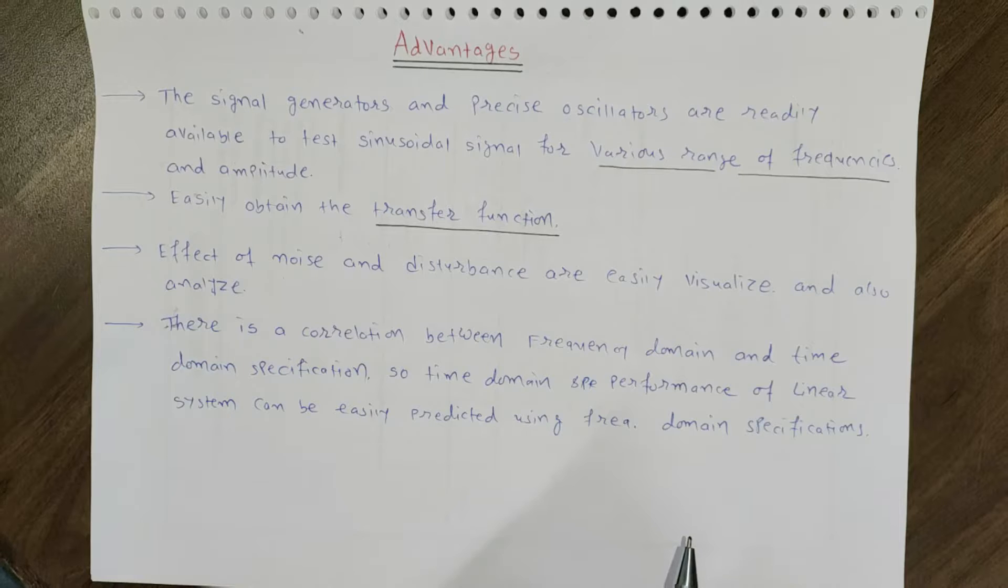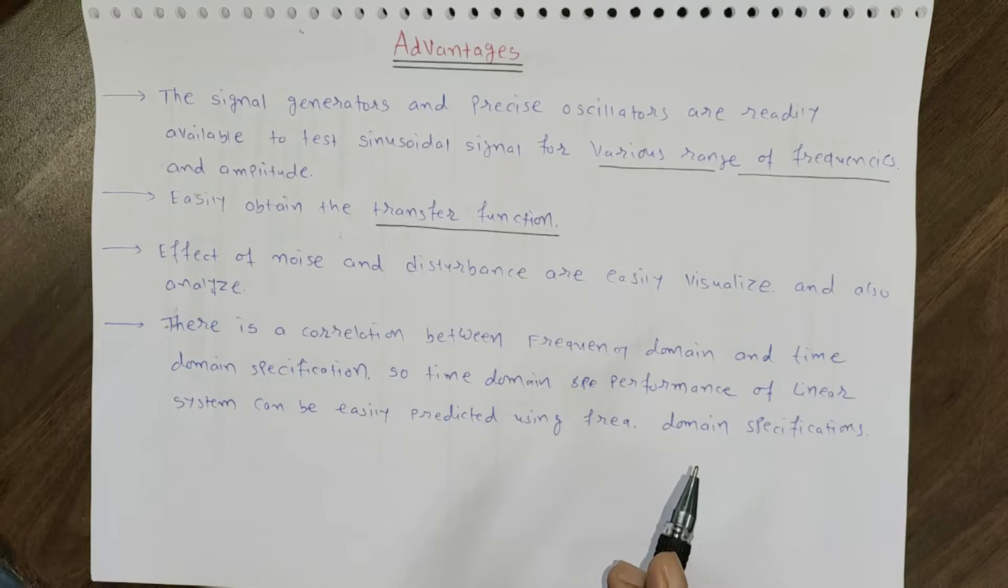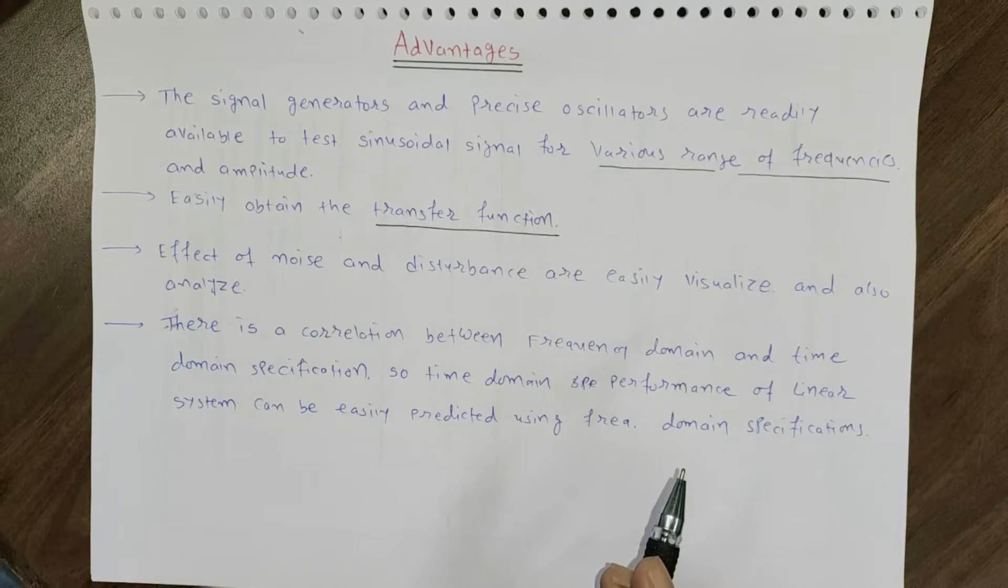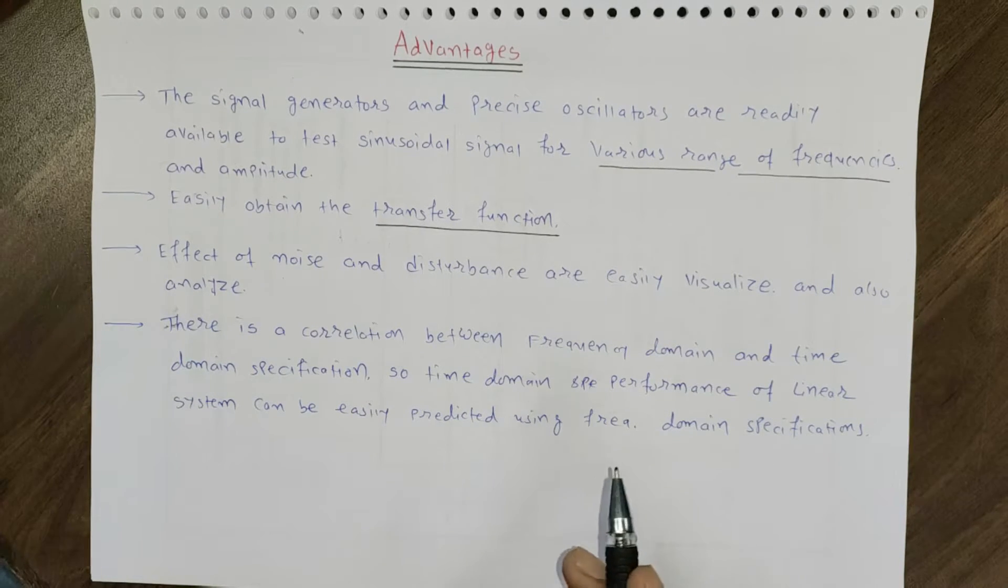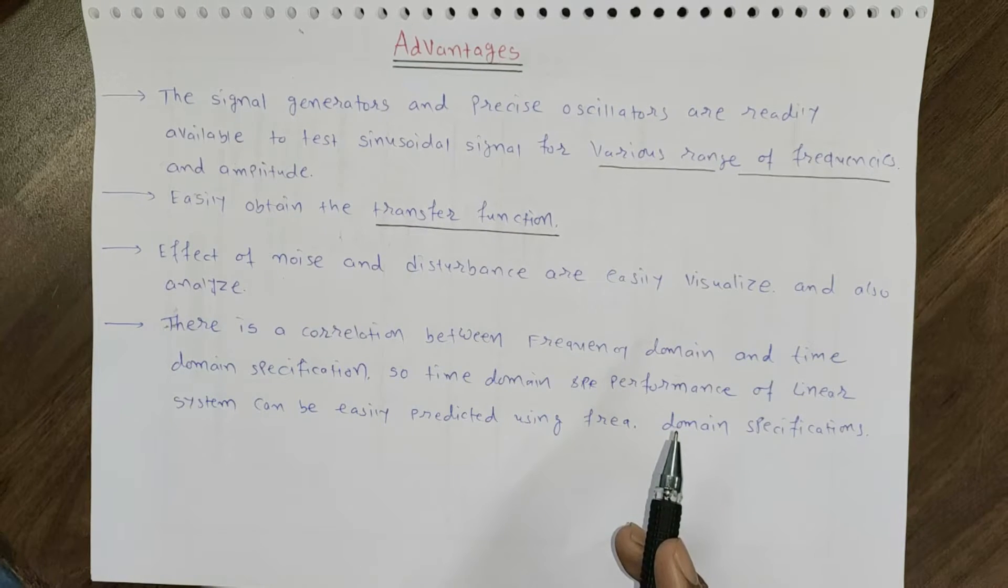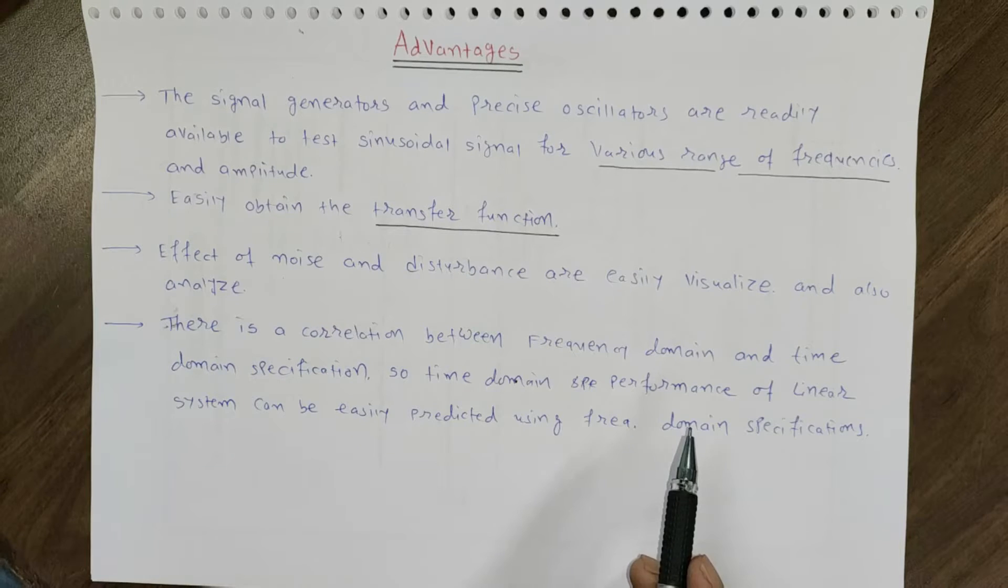We also saw that the effect of noise and disturbance in terms of frequency. When talking about sensitivity and complementary sensitivity function, we classify disturbance as low frequency signal and noise as high frequency signal. The effect of noise and disturbance can be easily visualized, and there is always a correlation between time domain signal and frequency domain specification.